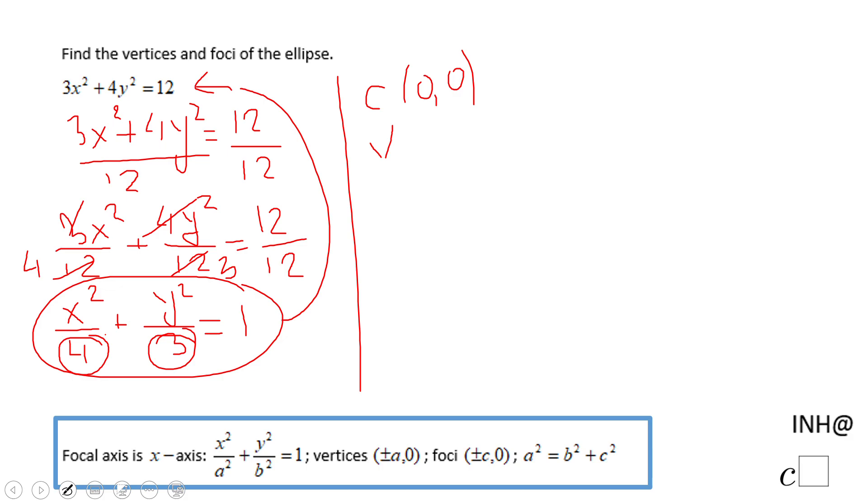So we have a² = 4, which is going to give us a = ±2, which is going to give us the vertices of (2,0) and (-2,0).